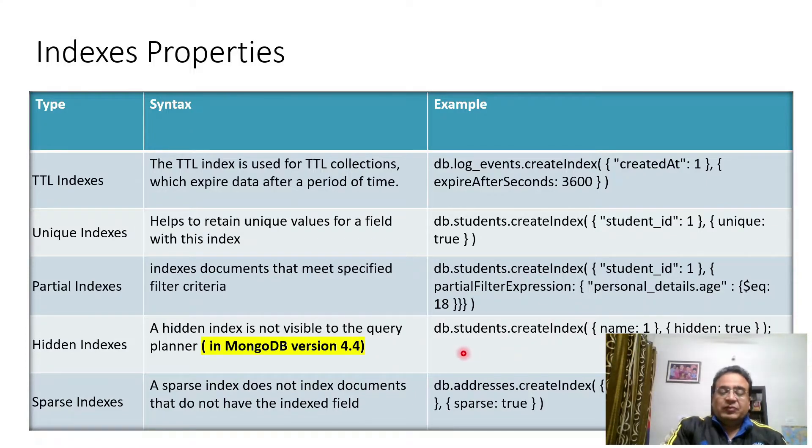Then sparse index. In some sense it is equal to partial indexes but it does not index documents that do not have the indexed field. It is different from unique indexes, it is different from partial indexes also to some extent. It will not index any document which does not have any indexed field. For example, if any document of this addresses collection personal details dot sibling is not having that field, then it will not be indexed. That is the meaning of this.